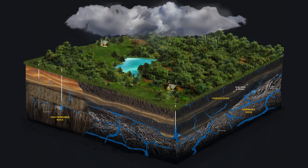Often people think aquifers are large connected underground lakes. This is not the case. In the Darwin rural area there are 13 different aquifers. These aquifers have different permeability, numerous layers and differences in composition and density.